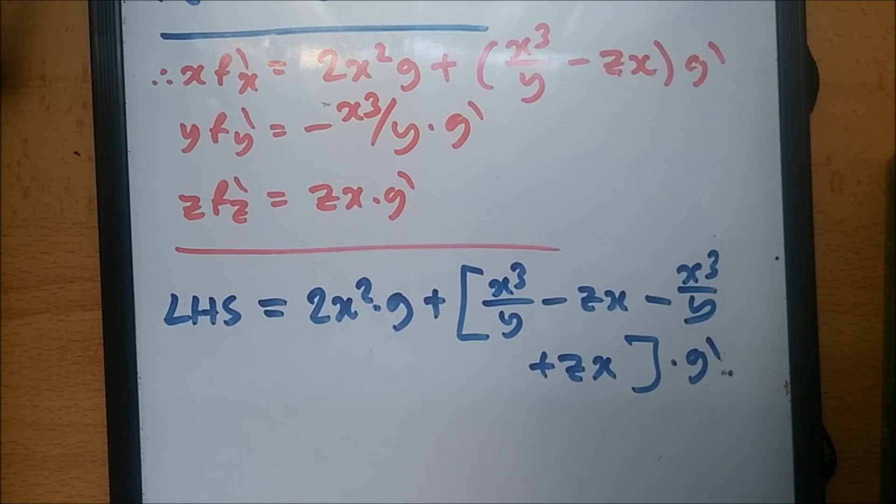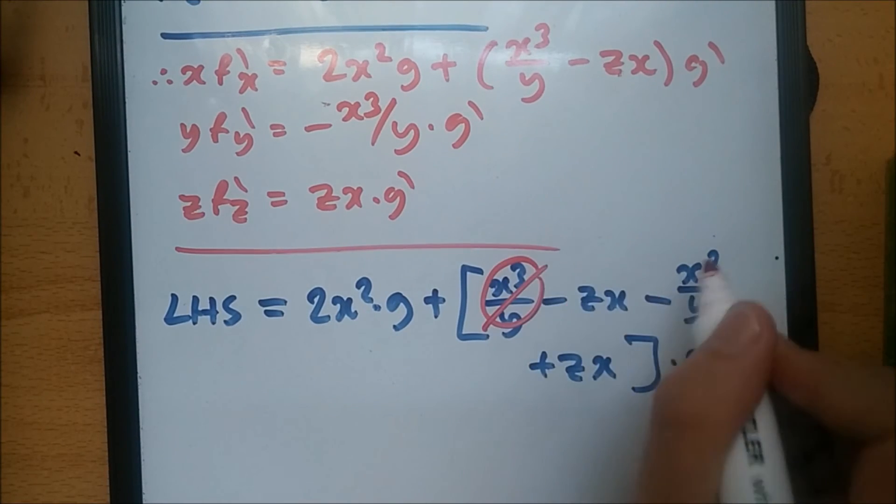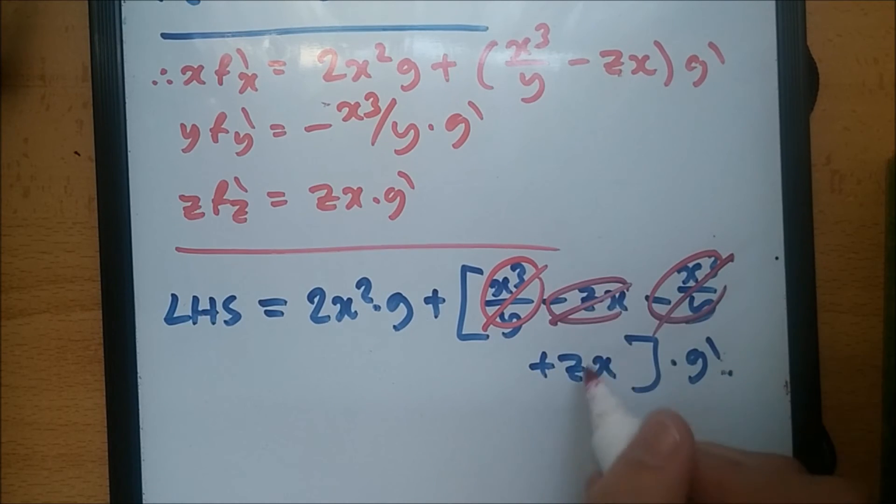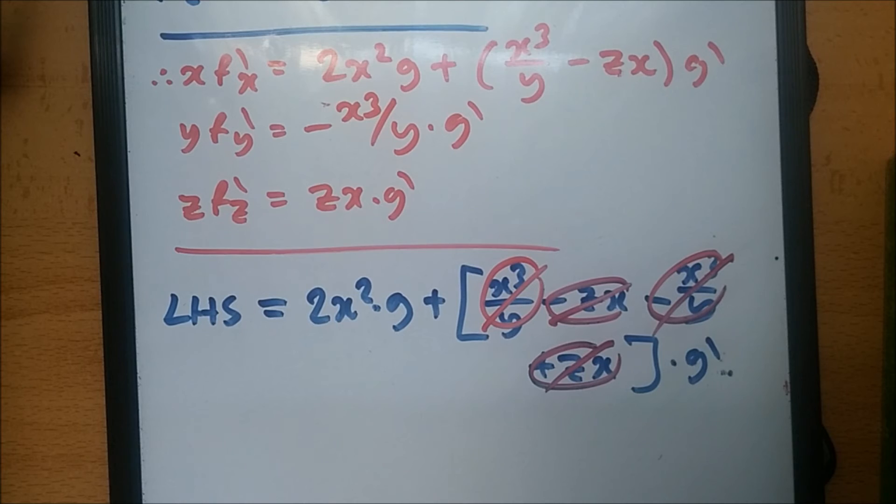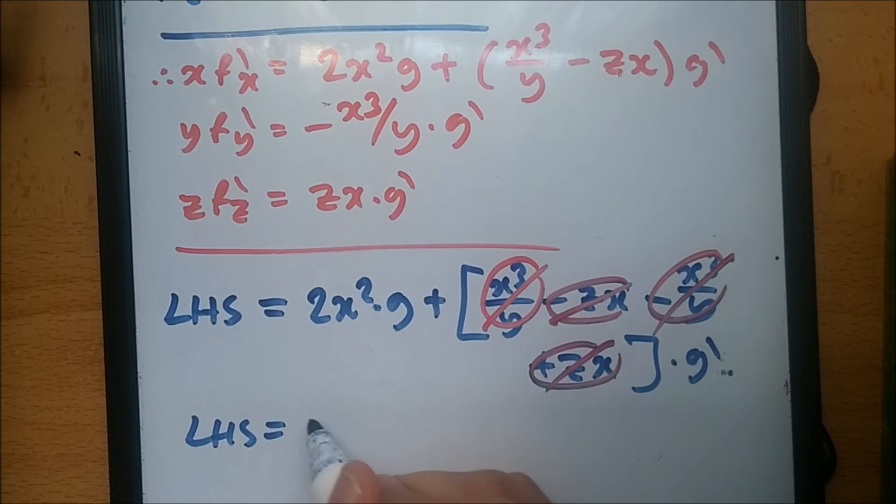Notice that we get some terms cancel now. You know, clearly this goes with this, this goes with this. So all of this is actually gone. Therefore, the left-hand side equals 2x squared times g.